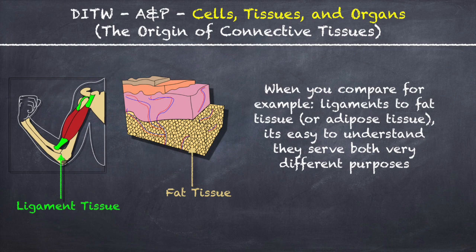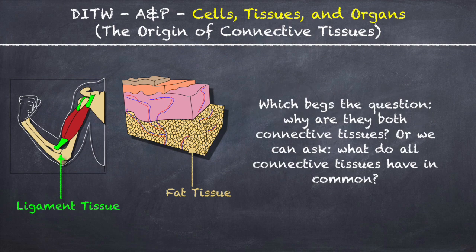When you compare, for example, ligaments to fat tissue or adipose tissue, it's easy to understand they serve very different purposes, which begs the question: why are they both connective tissues? Or we can ask, what do all connective tissues have in common?